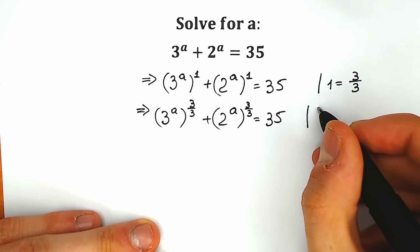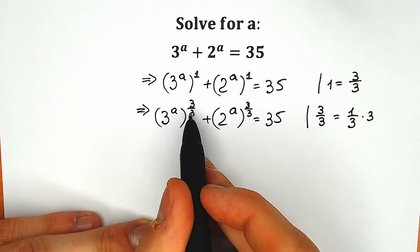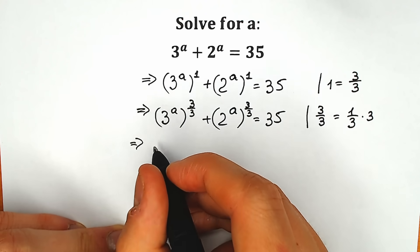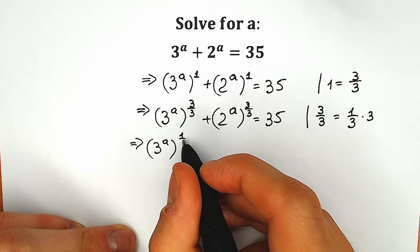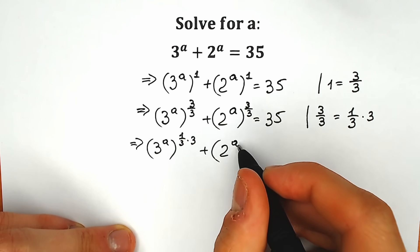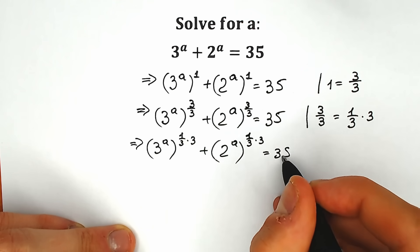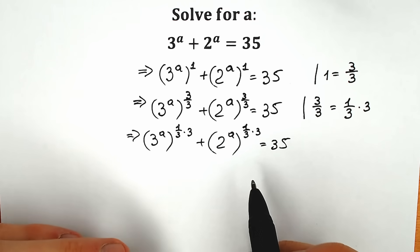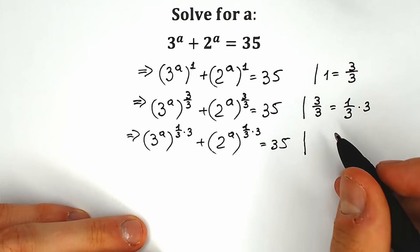Instead of 3 over 3, let's write 1/3 times 3. So as a result we have 3 to the power a raised to the power 1/3 times 3, plus 2 to the power a to the power 1/3 times 3. It changes nothing — 1/3 times 3 equals 1.